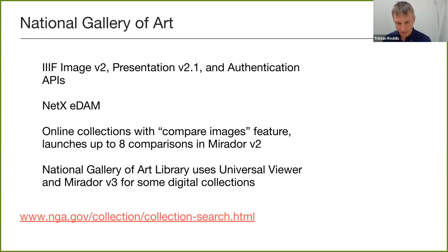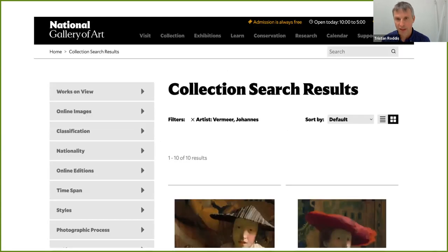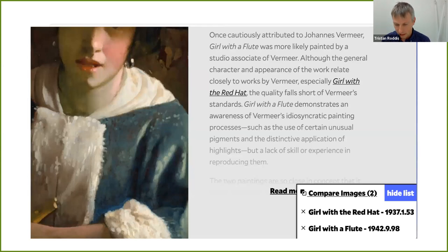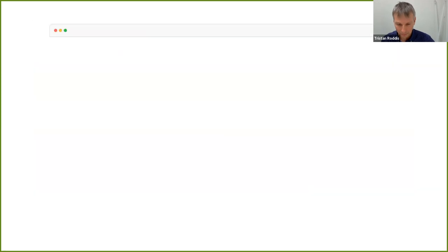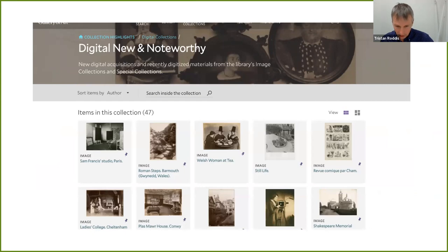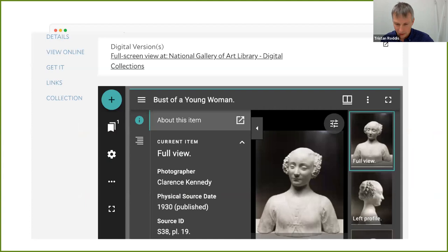The final institution example is the National Gallery of Art, which very well supports both the Image and Presentation APIs and also uses the Authentication API to restrict access to high-resolution viewers, provided by NetX. They have a comparison feature in their collection: you can add objects and compare images side by side using Mirador. They also use Mirador 3 for their digital collections.